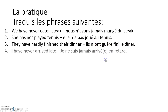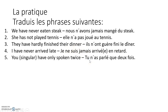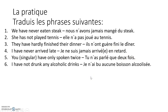'I have never arrived late' — je ne suis jamais arrivé en retard. So we've got the ne and the jamais around the auxiliary être this time. 'You have only spoken twice' — tu n'as parlé que deux fois. Remember with 'only': ne goes before the auxiliary, then the past participle, then que, then whatever we need at the end. 'I have not drunk any alcoholic drinks' — similarly, ne before the auxiliary verb, then the past participle, then aucune, because boisson is feminine.